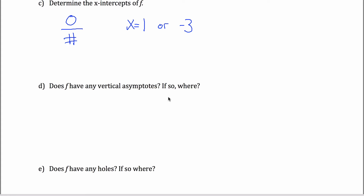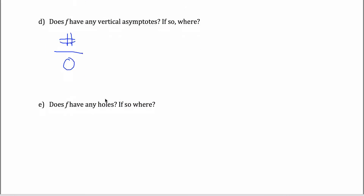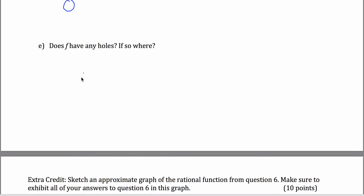Does f have any vertical asymptotes? Vertical asymptotes occur when you have a non-zero number divided by zero — so are there values of x that make the denominator 0 without also making the numerator 0? Negative 1 will make one factor in the denominator 0, and positive 3 will do the same, and neither of those makes the numerator 0. So there are vertical asymptotes at x equals negative 1 and x equals positive 3.